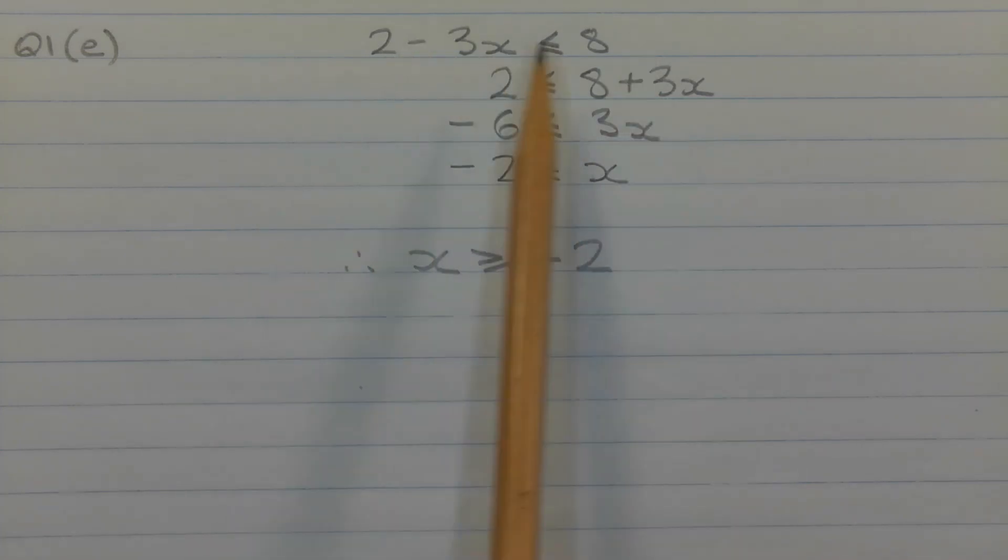Let's start off with the inequality, 2 minus 3x less than or equal to 8. I'm going to add 3x to both sides of the inequality. So we get 2 less than or equal to 8 plus 3x.